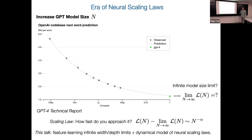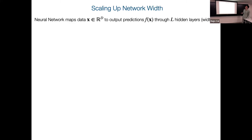Today I'm going to describe a couple of different types of infinite parameter limits: infinite width limits and infinite depth limits that preserve feature learning — that's a key principle. And then at the end, we're going to work on a model that, in some simple settings, captures these scaling law convergence rates.